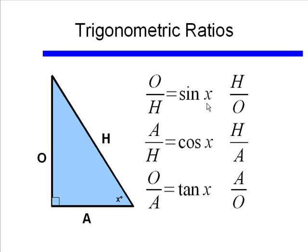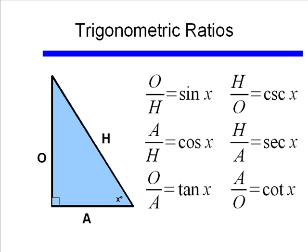This corresponds to our six trigonometric ratios. Sine of angle x is defined as the opposite side over the hypotenuse. Cosine of an angle is defined as the adjacent over the hypotenuse. Tangent of this angle is the opposite over the adjacent side. We also have three additional trigonometric functions: cosecant of x, which equals the hypotenuse over the opposite; secant of x, which equals the hypotenuse over the adjacent side; and cotangent of x, which equals the adjacent side over the opposite side.